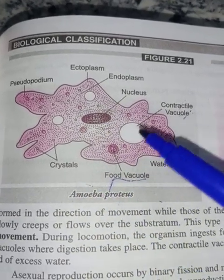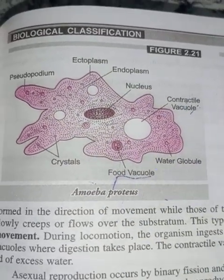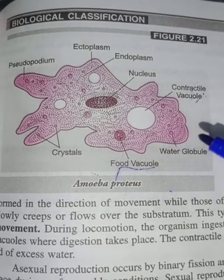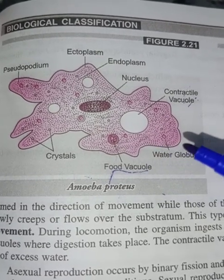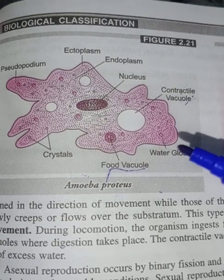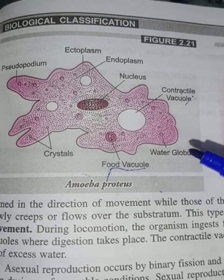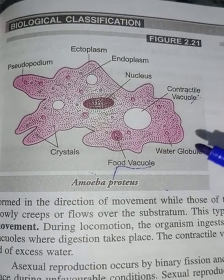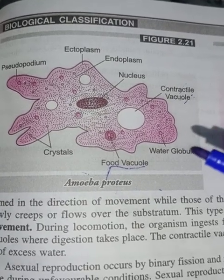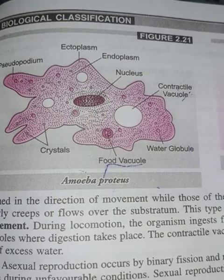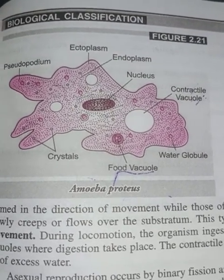Crystals are also embedded in the cytoplasm of Amoeba. Amoeba is the best example for the kingdom Protista; protozoans are one class of the Protista kingdom. Examples of protozoans include Amoeba, Entamoeba histolytica, and Plasmodium vivax. Thank you, and please subscribe for more life science videos.